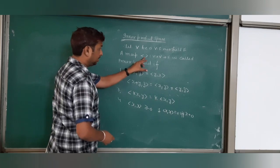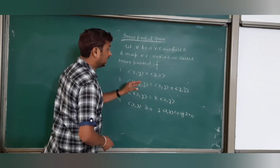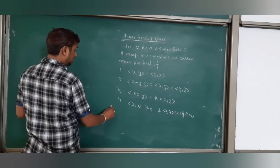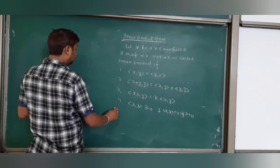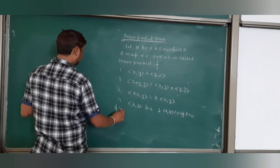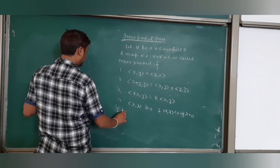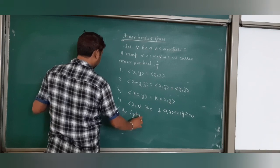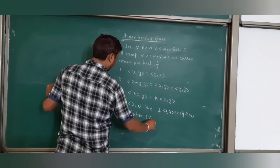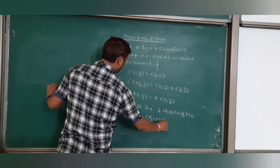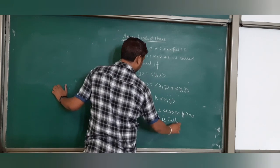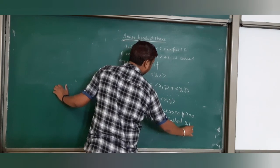If this map satisfies these properties, then it is called inner product and the system V with the inner product is called inner product space.